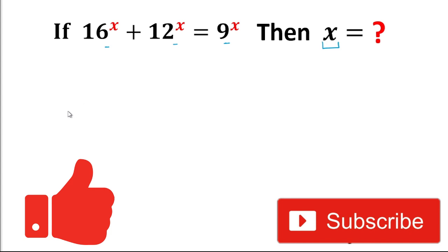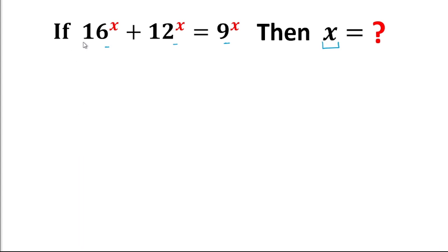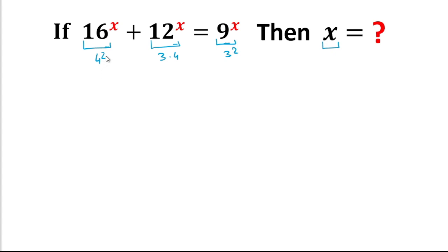Let's start. If you look at 16^x, note that 16 is the square of 4, so we can write 4². And 12 is the multiplication of 3 and 4, whereas 9 is equal to 3². So for solving this expression, we will divide the left hand side by 16^x.